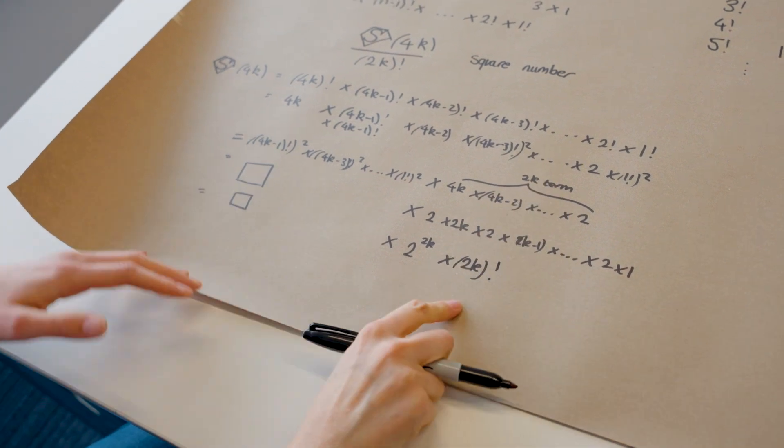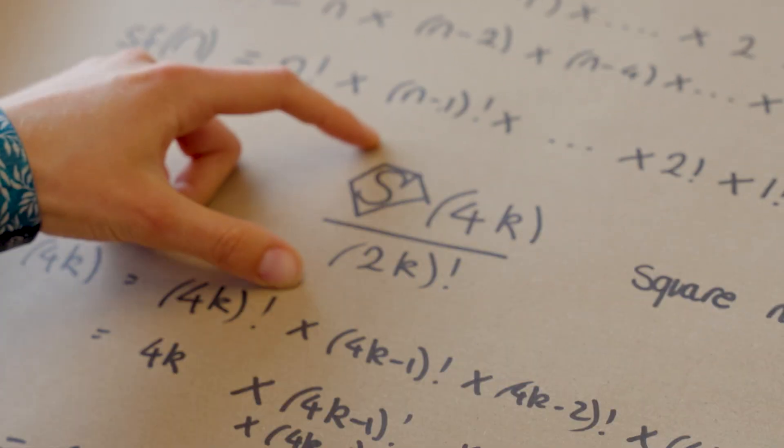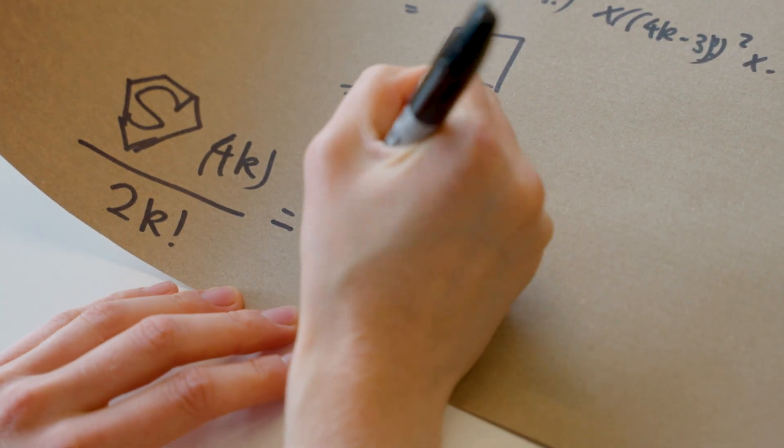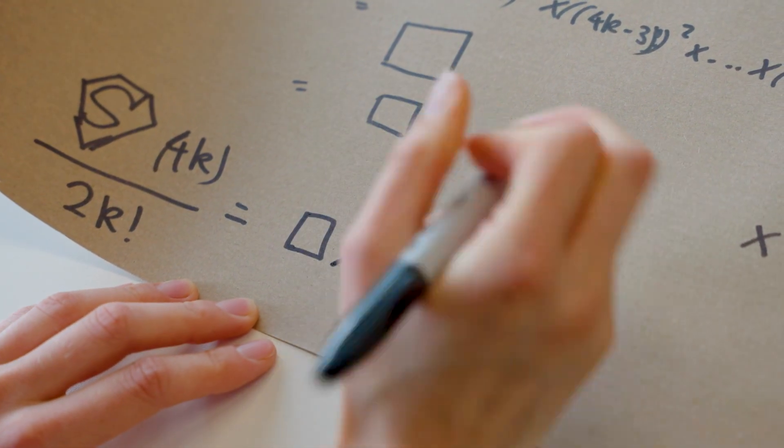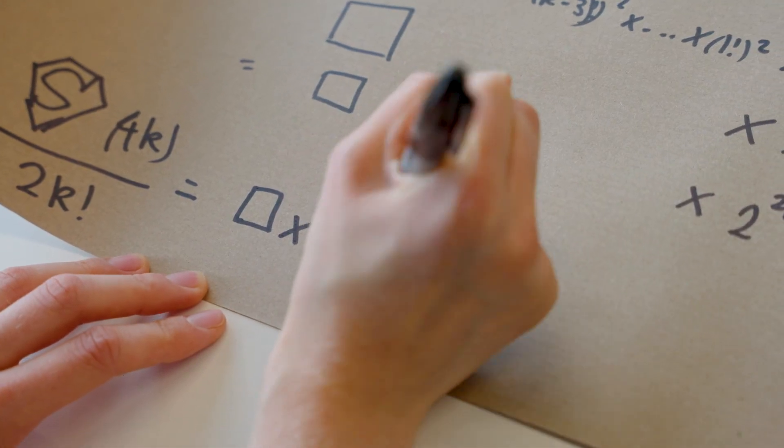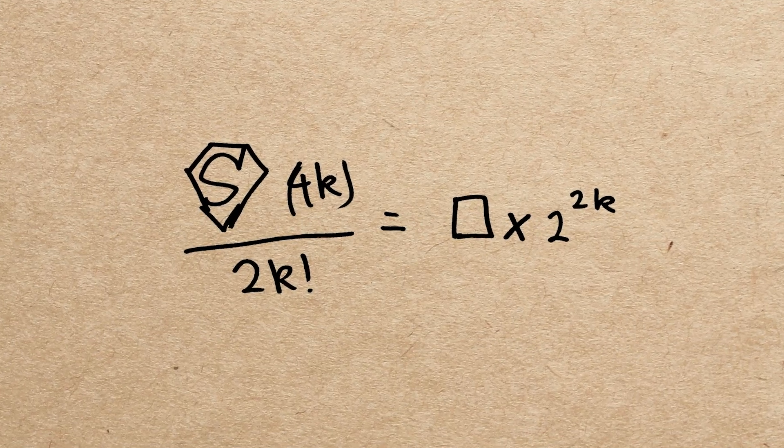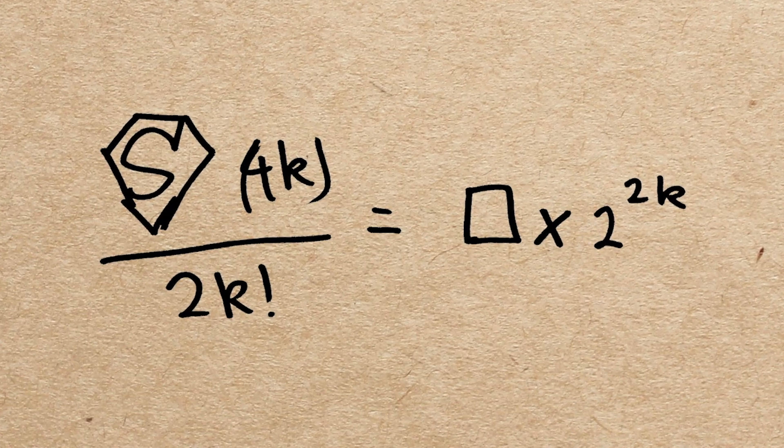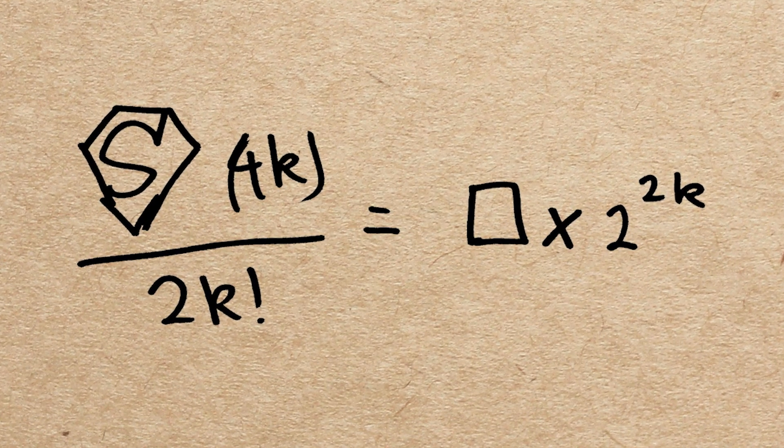And now, originally, we're looking at this divided by 2k factorial. So our 4k superfactorial divided by 2k factorial gives us a square number times 2 to the 2k, which is going to be a square number because we've got a power of 2. So it works. A seemingly non-obvious fact can be shown.